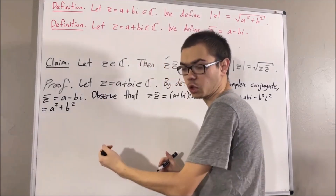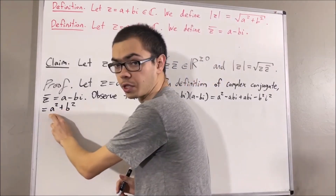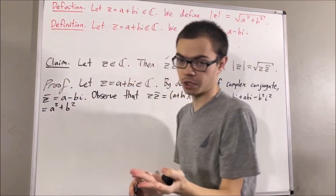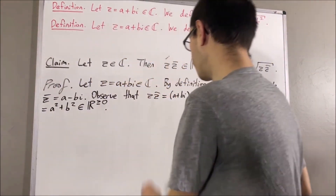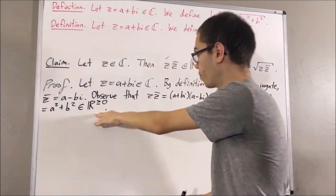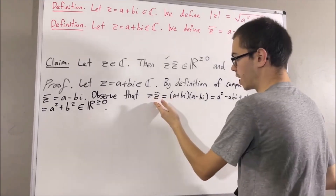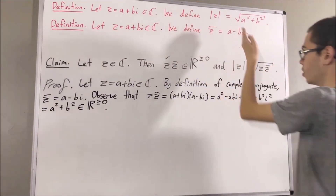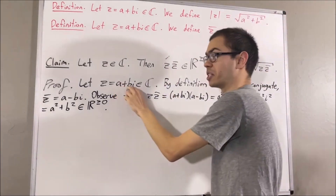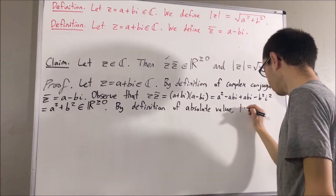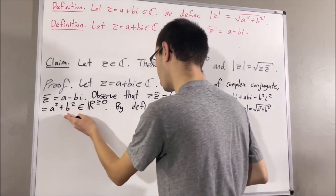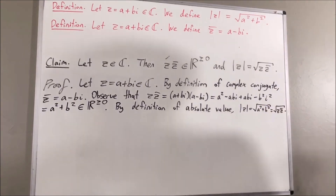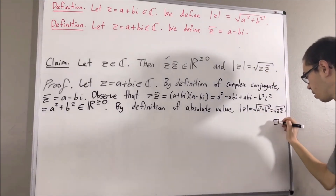For any real number x, x squared is greater than or equal to zero. So in particular, a squared is greater than or equal to zero, and b squared is greater than or equal to zero. Therefore their sum a squared plus b squared is greater than or equal to zero, so z times z bar is a non-negative real number. And since z times z bar equals a squared plus b squared, and by definition the absolute value of z is the square root of a squared plus b squared, we can replace a squared plus b squared with z times z bar. So the absolute value of z equals the square root of z times z bar, which completes the proof.